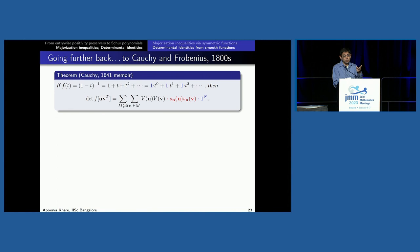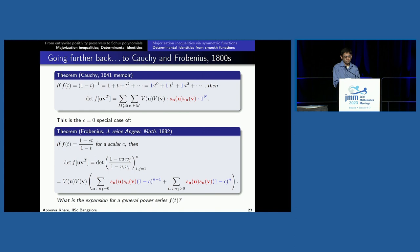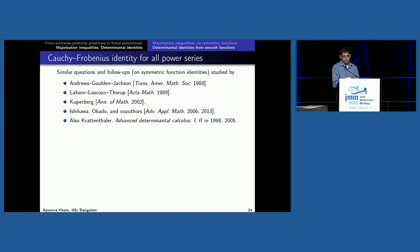This identity was generalized by Frobenius to a sum of two geometric series. F of u·v^T then becomes again a Vandermonde part and a Schur part, and the expansion is broken into two sums. It's natural to ask: what is the expansion for a general power series F(t) = Σ f_m t^m applied entrywise to such a matrix? Similar questions have been studied by several different people in the literature.